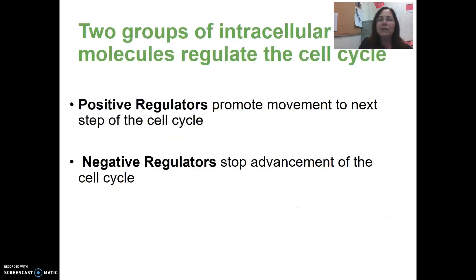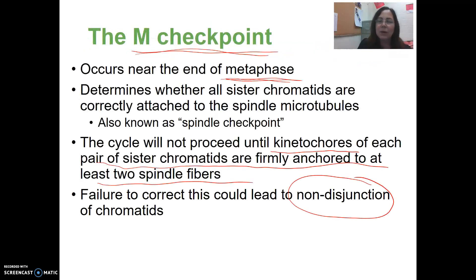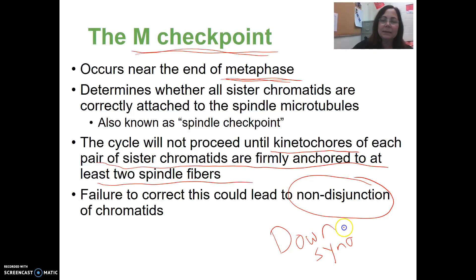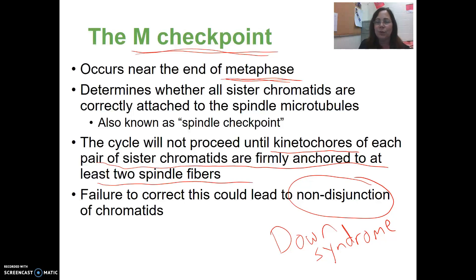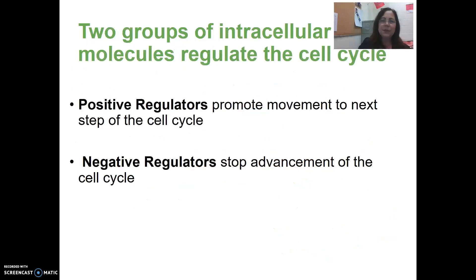We actually have diseases and disorders in humans caused by non-disjunction. Probably the most common one is Down syndrome, which occurs because there's an extra chromosome at pair number 21. That is an example of non-disjunction.